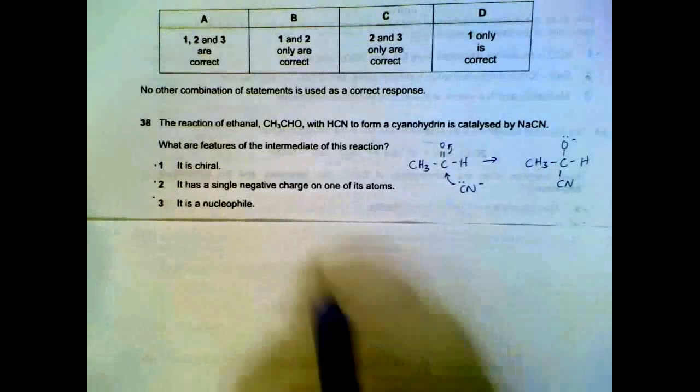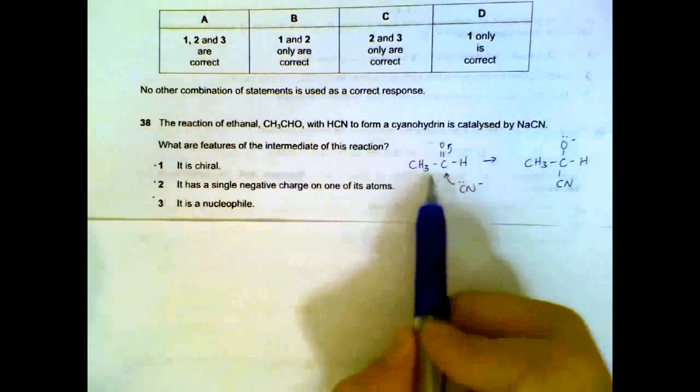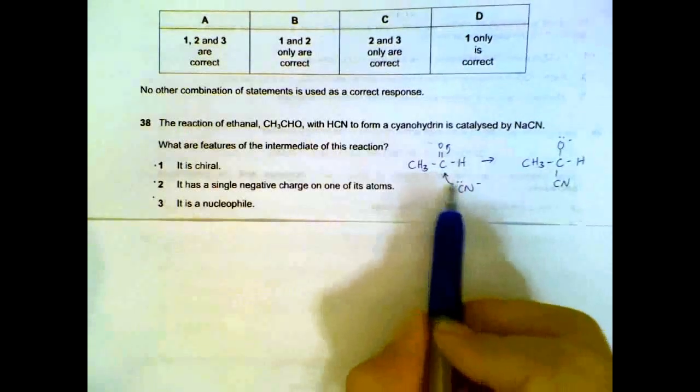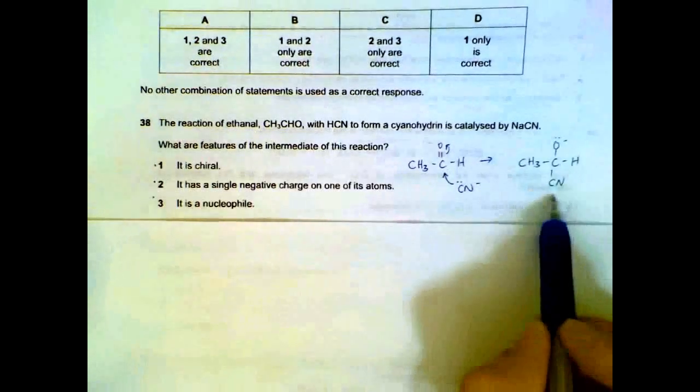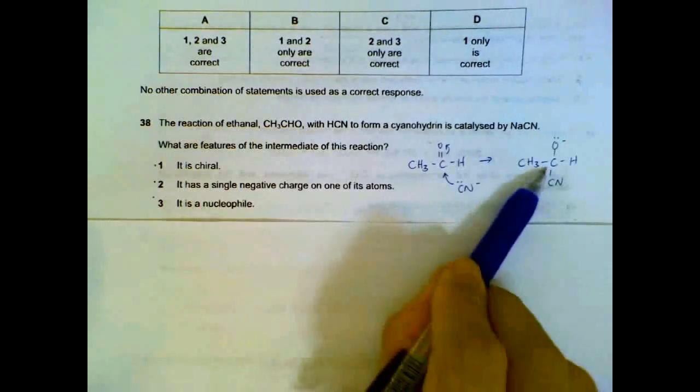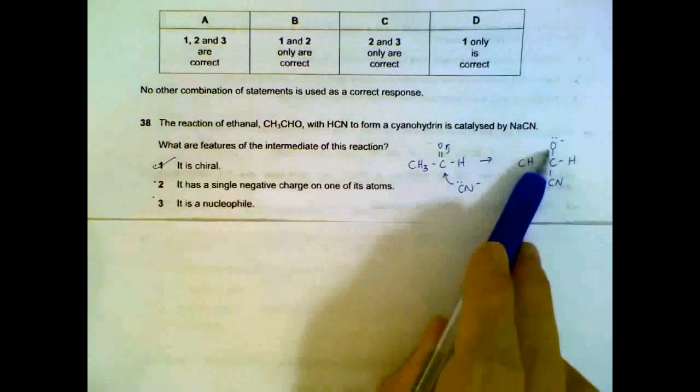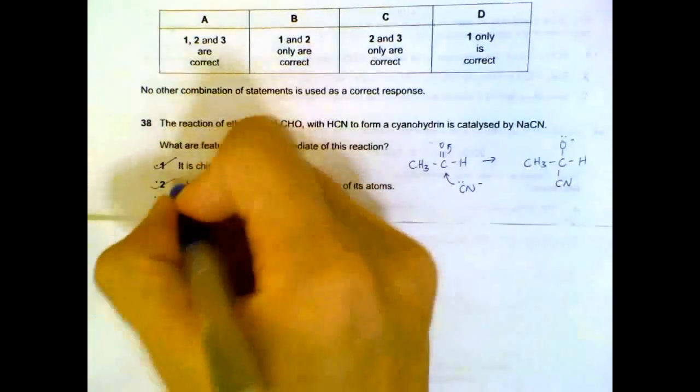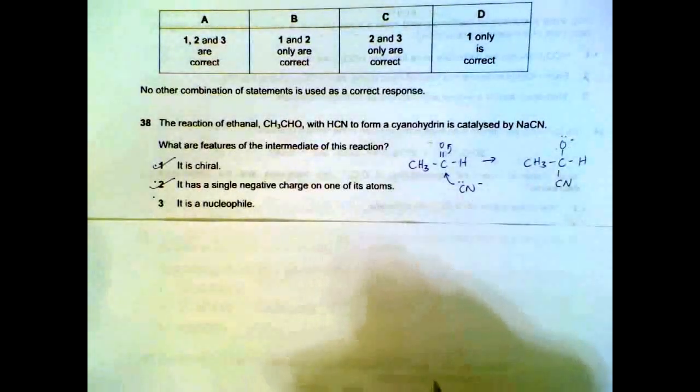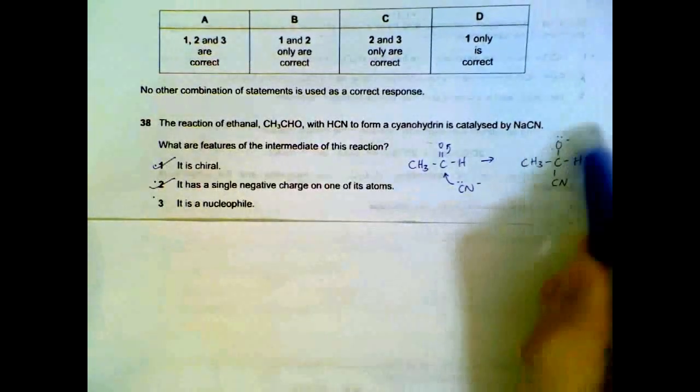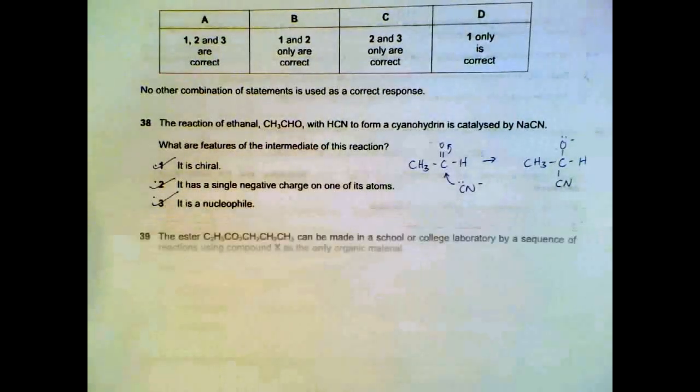Question 38. Reaction with ethanol with HCN. The intermediate: your CN- will be attacking your carbon, and this is our intermediate. It is chiral because of this carbon here. So statement 1 is correct. Oxygen has a single negative charge, and this one with a lone pair will actually be able to act as a nucleophile. It will actually look for positive carbons or positive regions. A nucleophile will have a lone pair.